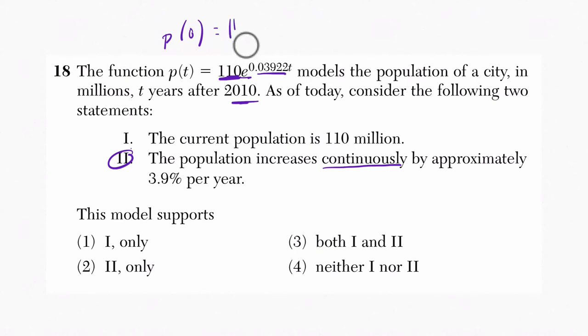Look what happens. If you plug in 0, you get 110 times E to the power of 0.03922 times 0. This right here is just 0. 0.03922 times 0 is 0.